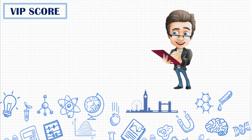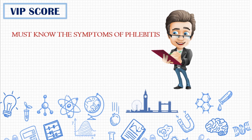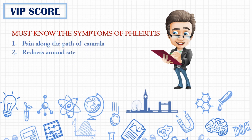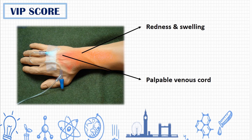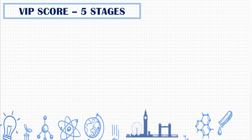Before going to the scoring, you must know how to recognize the symptoms of phlebitis. The symptoms are: first, pain along the path of the cannula; second, redness around the site; third, swelling; fourth, palpable venous cord; and fifth, pyrexia. The image illustrates a person with an IV line showing redness, swelling, and palpable venous cord that are observed visually. The other symptom, pain, needs to be confirmed with patient verbalization, and pyrexia needs to be found through temperature monitoring.